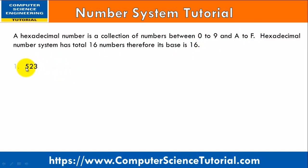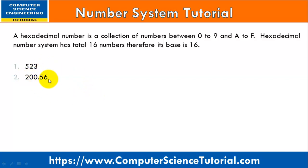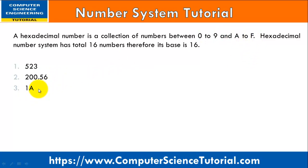For example, the number 523: digits 5, 2, 3 all exist between 0 and 9, therefore it is a valid hexadecimal number. Similarly, 256 — all digits exist between 0 to 9 — valid hexadecimal. 1A1: 1 exists between 0 to 9 and A exists between A to F, so it is also a valid hexadecimal number. Likewise, 1A0.23 is also a valid hexadecimal number.